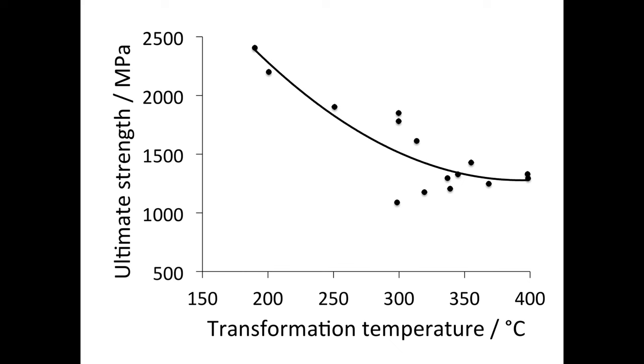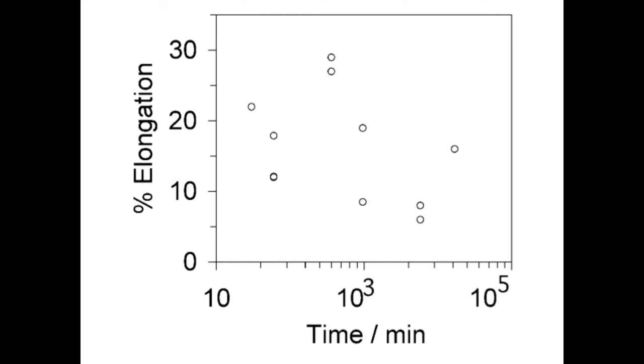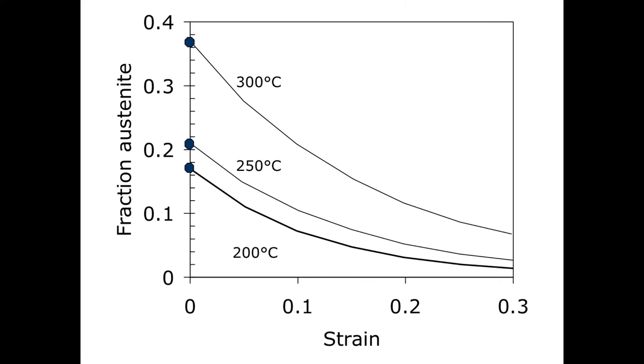Here we have a plot of ultimate tensile strength versus transformation temperature, illustrating that the structure gets finer when transformation temperature is reduced and therefore the material gets stronger. Now elongation is badly behaved—there's not much correlation of elongation versus transformation time or temperature. The reason for this is illustrated here.